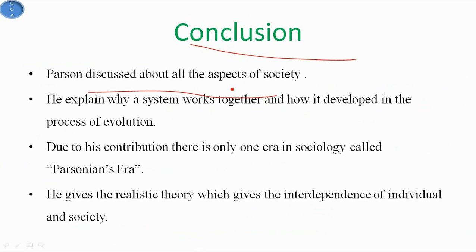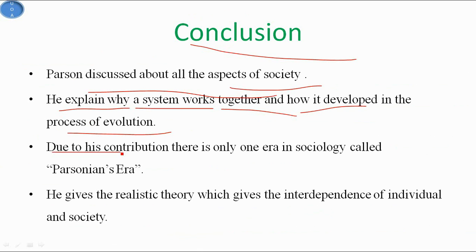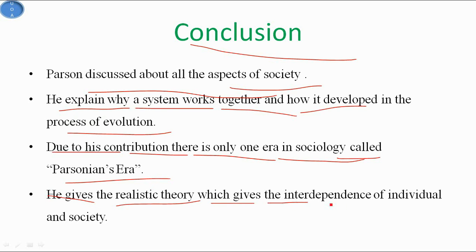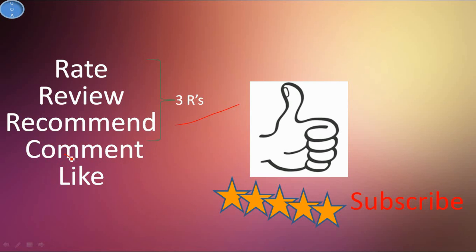In conclusion, Parsons discussed all aspects of society — he explained why a system works together and how it develops through the process of evolution. Due to his contribution there is a distinct era in sociology called the Parsonian era, approximately from 1970 to 1990s. He gives a realistic theory of the interdependence of the individual and society. Thank you for watching this video — please like, share, comment, and subscribe.